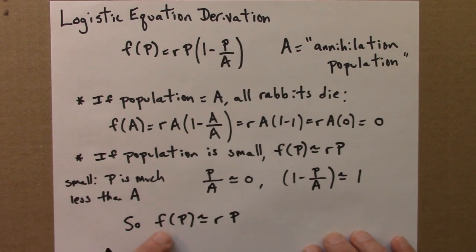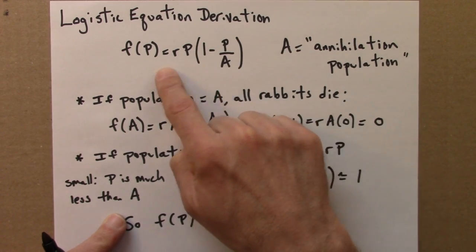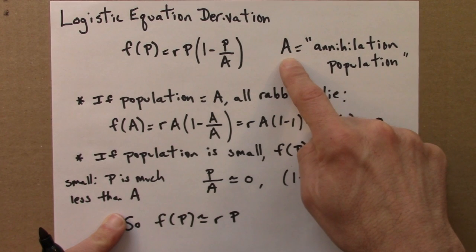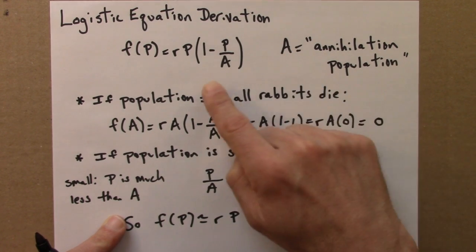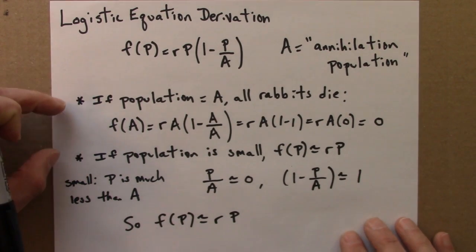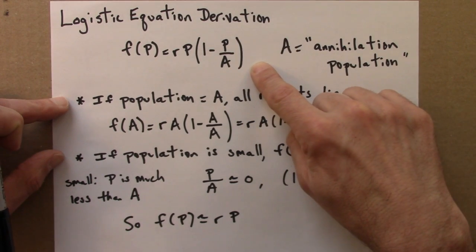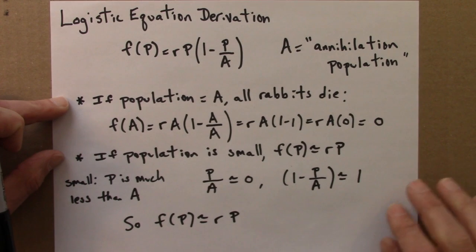So 1 minus something close to 0 is close to 1. This will be just a little bit less than 1. So this term in parentheses here is around 1. So this equation just becomes rp. So for small populations, this logistic equation, the population will grow rapidly like the rabbit example from the previous video. But then once the population gets large, this term starts to matter and the population growth will slow down. And there's some absolute upper limit and annihilation or apocalypse number at which the population will completely crash. So these two properties, I hope, seem reasonable for a simple model whose only goal is to have some limit to the rabbit growth.